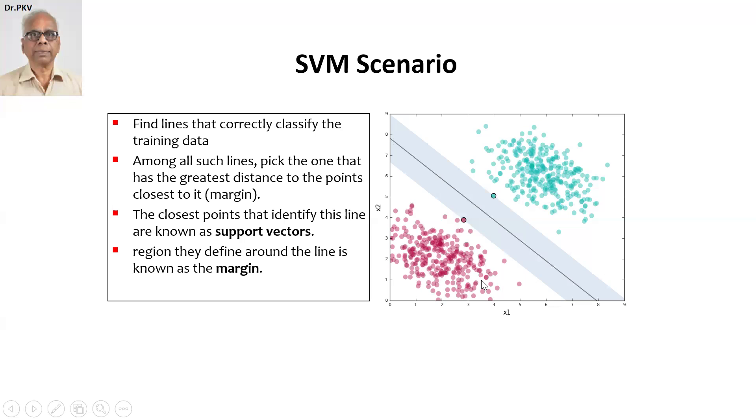Among all such lines, pick the one that has the greatest distance to the points closest to it or closest to the margin. There are two points here. For example, a little dark one here and one here. This is closest to the margin here. This is margin. So one line of the hyperplane which is positive and one negative and this is the best hyperplane.